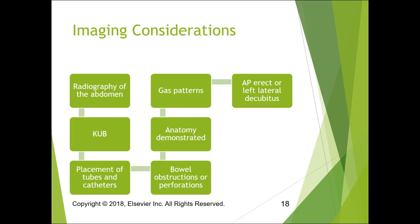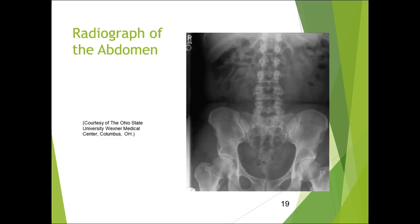If a patient has an obstruction, we need to see the layering of fluid versus air. It'll have a complete step-off — a straight line between the fluid and the air — which tells you there's an obstruction. If the patient can't stand, roll them into a left lateral decubitus to see that layering. You will not see that layering on a supine KUB.